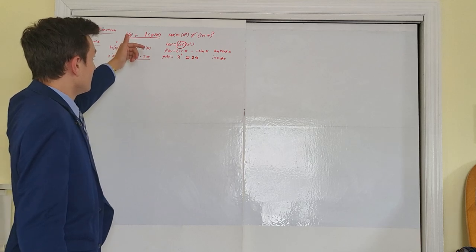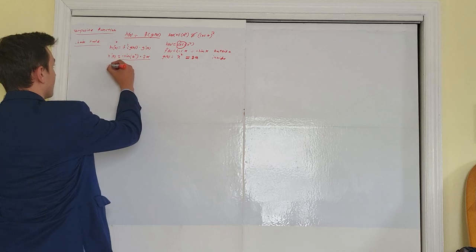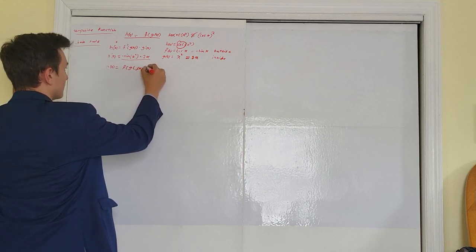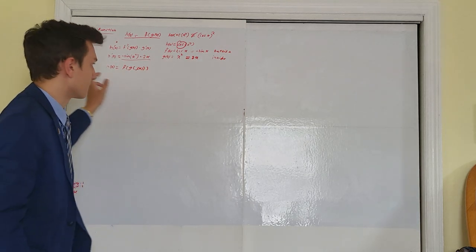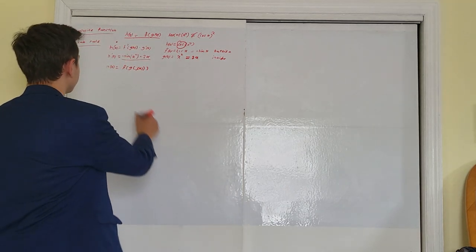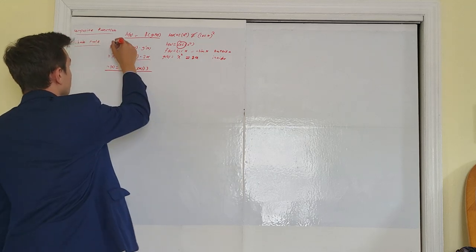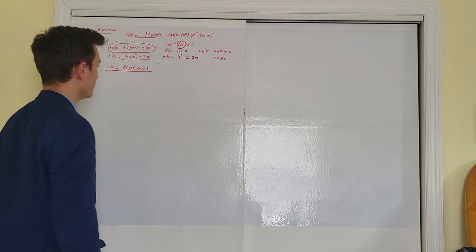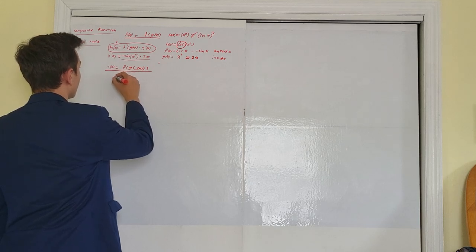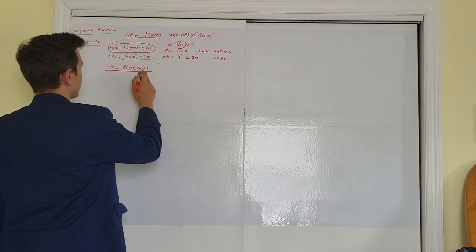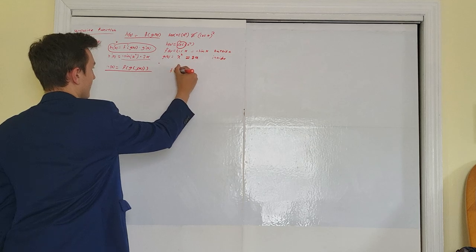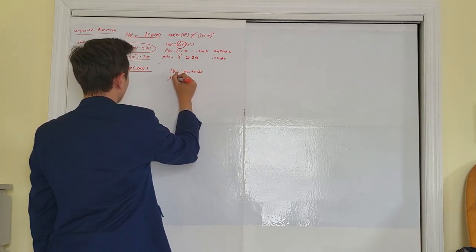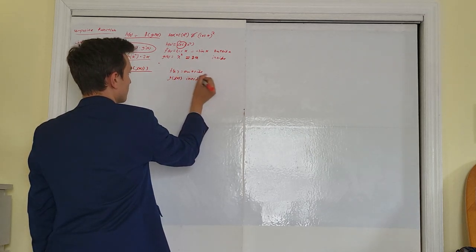Now, that is not the only form of a composite function. You could have h of x equals f of g of j of x — something with more than one layer; you could have something with 40 layers. So let's show you how to deal with that. There's no new rule — the same rule still applies. It just needs to be used more than once. Let's find what our outside is: our outside is f of x. And let's find what our inside is: g of j of x.